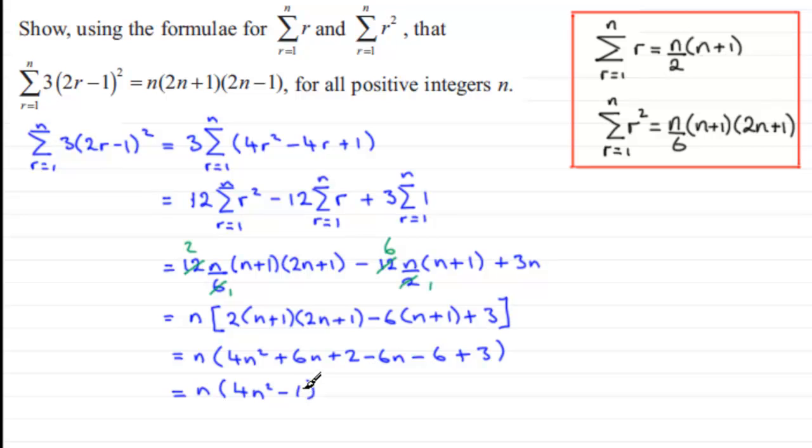So what you've got here is the difference of 2 squares. So this factorises then to n times 2n plus 1 and 2n minus 1. And that's what we had to show. All right.